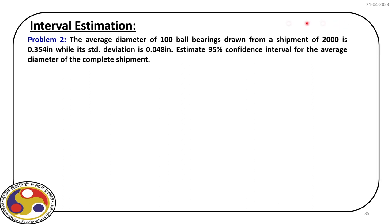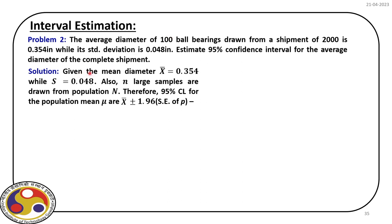Now let us take a different example. The average diameter of 100 ball bearings drawn from a shipment of 2000 is 0.354 inch, while its standard deviation is 0.048 inch. The problem is to estimate the 95% confidence interval for the average diameter of the complete shipment — not for the 100 samples drawn. The sample mean based on 100 ball bearings is 0.354 inch and its standard deviation is 0.048.